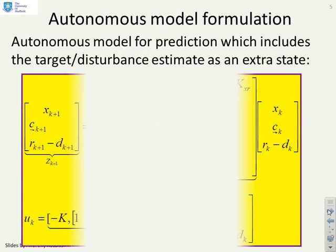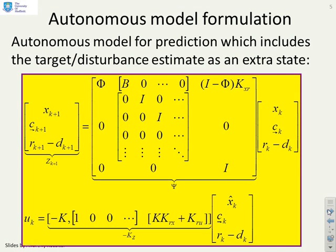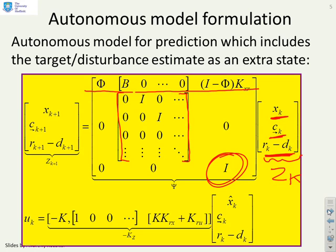If I put that all together, I can now form an autonomous model with an augmented state ZK where this state includes my X, my degrees of freedom C, and my R-D term. If you look at this augmented model, the top row basically tells you how XK goes forward, which is the main prediction equation. The middle block here tells you about your degrees of freedom C future, and this block in the bottom right tells you that R-D essentially stays constant. I can also write my input in terms of this augmented state. But the key thing is I have now got an autonomous model which tells me how my augmented state evolves.